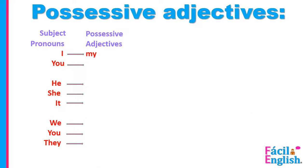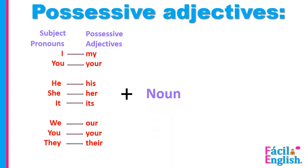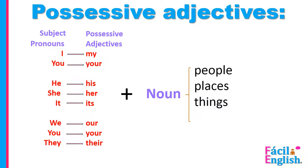I becomes my. You becomes your. He becomes his. She becomes her. It becomes its. We becomes our. You becomes your. And they becomes their. These are adjectives, so what always follows an adjective? It's always plus a noun. And the nouns are people, places, things, and or animals.